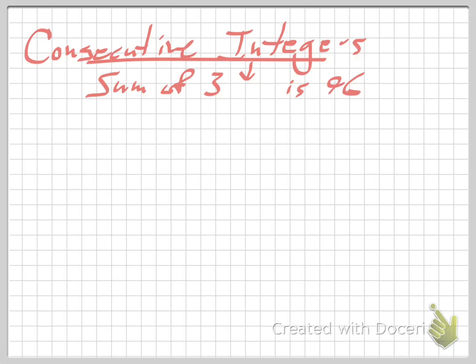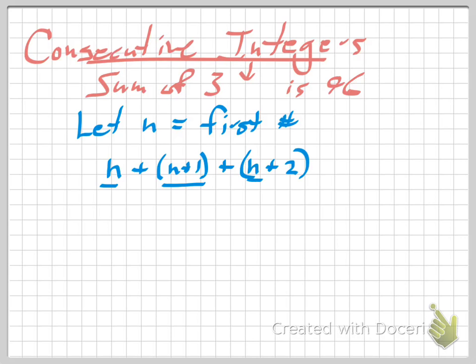Now the nice thing about consecutive integers is if you know the first one, all you have to do to get to the next one is add 1, and then to get to the one after that, take the first one and add 2 and so on. So what we're going to do is we're going to start by defining our variable. And I like to use N because it stands for a number. So let's let N equal the first number. Now if that's the case, let's make our equation. The sum of three consecutive integers is 96. So that means I'm going to take N. I'm going to add the one that comes right after that, that would just be N plus 1. Notice I'm using parentheses to kind of identify, here's the first number. Here's the second number. And the number that comes after that would be one more. So we'll say N plus 2. So that gives me three numbers that will be in order. And the sum of those is 96. Now all of these consecutive integer problems basically look exactly like this.